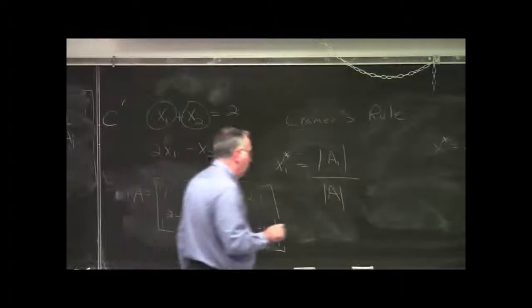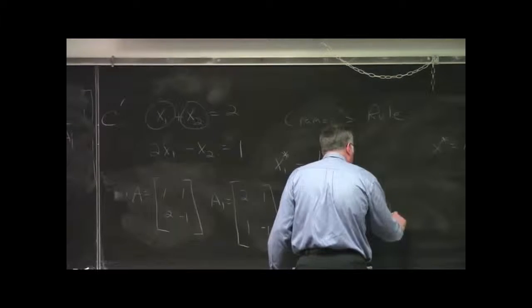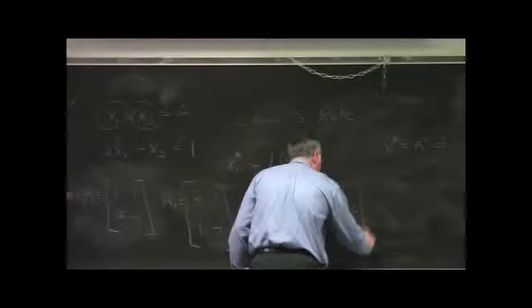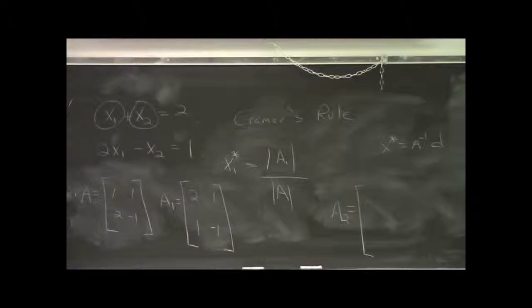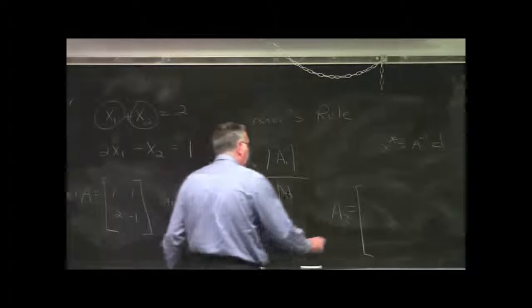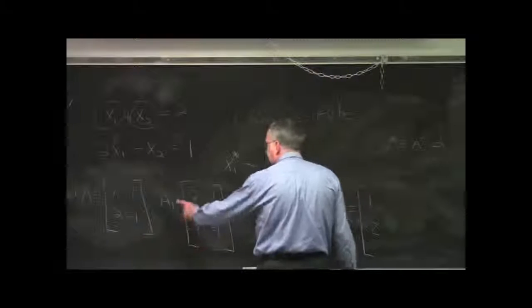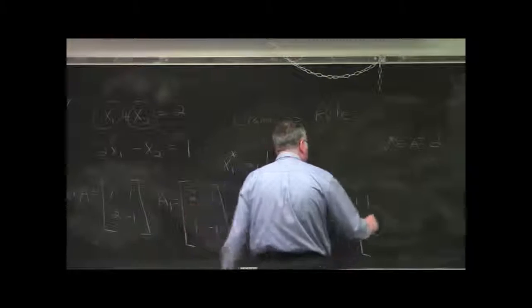A sub 2 is defined to be the A matrix with the second column of A replaced by the D vector. So A sub 2, the first column would just be the same as A: 1, 2. But then the second column we would replace with the D vector.